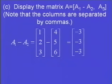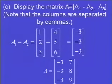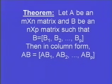So that's going to be my first column now of the matrix A. So matrix A is going to be negative 3, negative 3, negative 3 in the first column. Then we said the second column is A sub 3. And A sub 3 was 7, 8, 9.